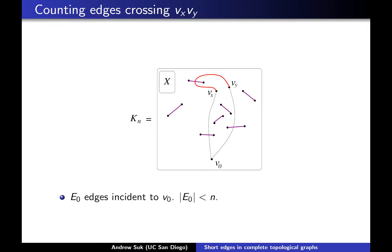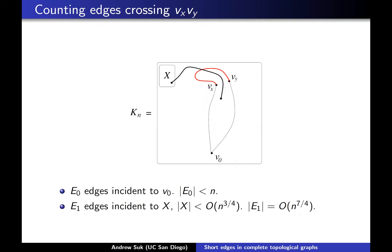Let's count the possible edges that cross this red edge. There are E₀: the edges incident to V₀, which is clearly not many — even if all the edges incident to V₀ cross the red edge, that's not a problem. Then there are the edges with one endpoint in the trash set X. But remember the trash set is small, so the number of edges with an endpoint in the trash set will be small — at most n^(7/4) because the trash set has size at most n^(3/4). So even if all of those edges cross the red edge, that's not a problem.